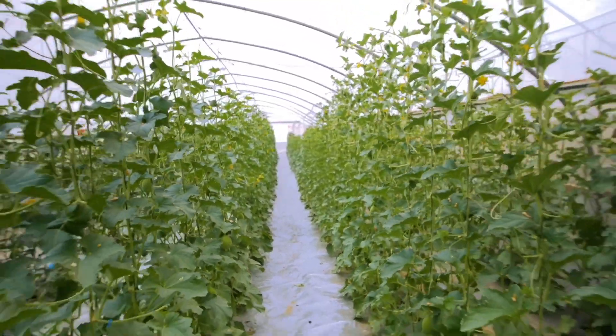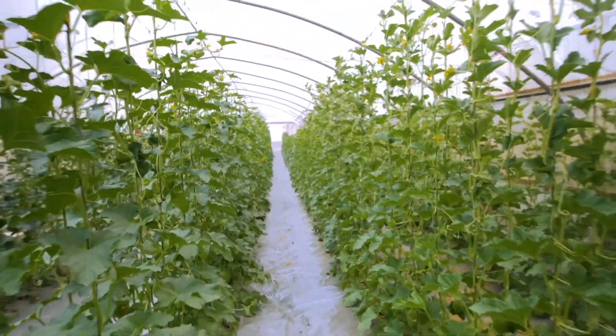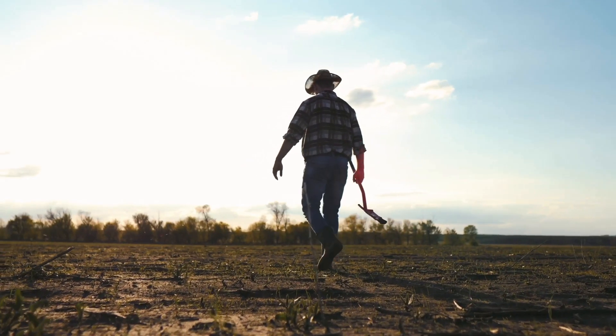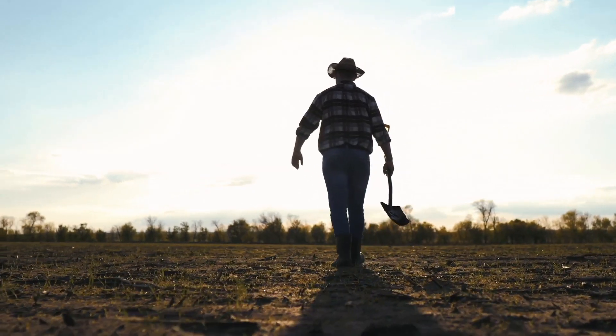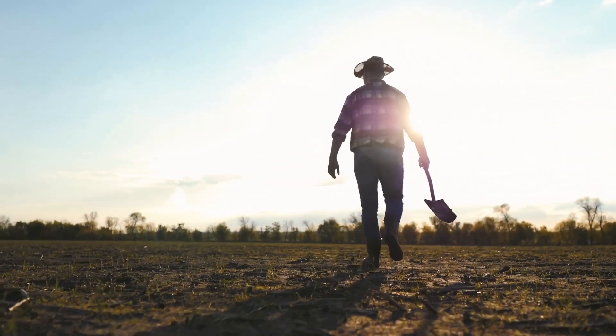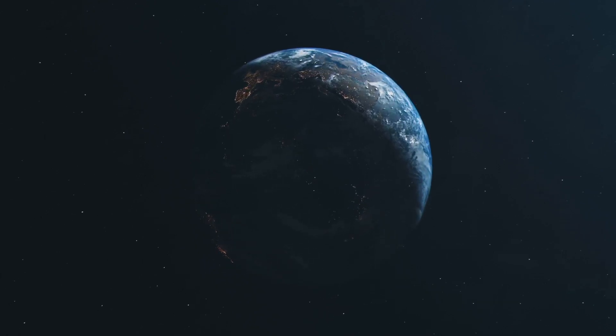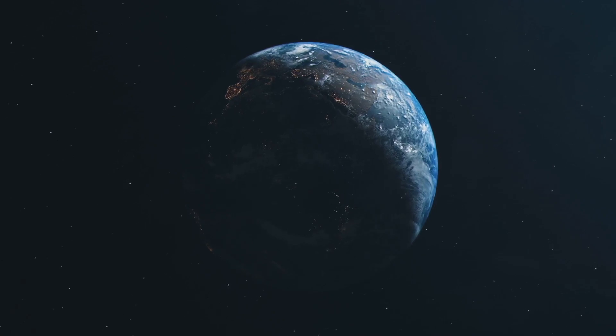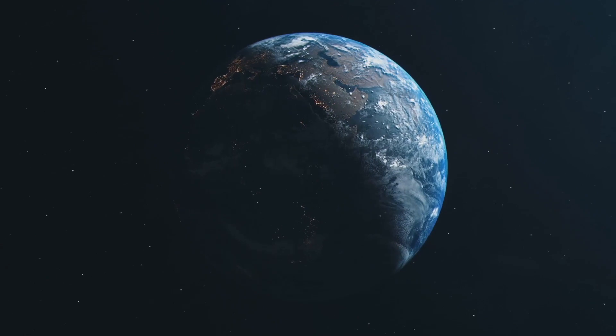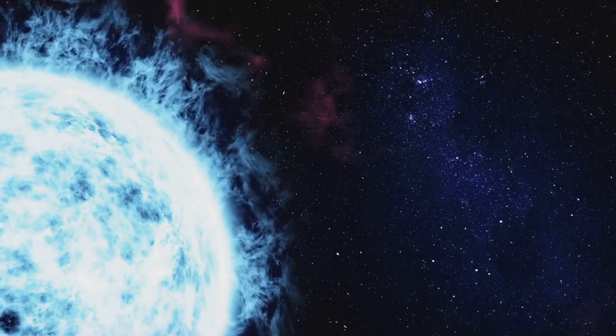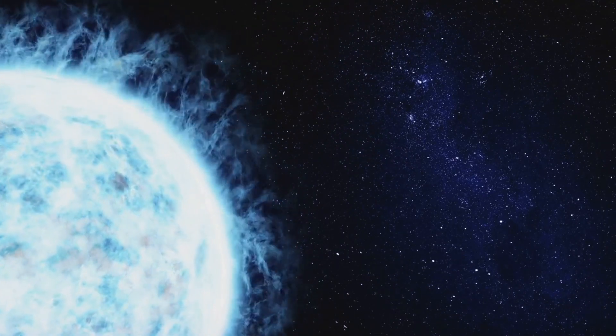Of course, human life would face its own set of challenges. We'd need to adapt not just biologically, but also socially and technologically. We'd need to rethink how we grow food, how we build our homes, and how we organize our societies. It would be a monumental challenge, but not an impossible one. So, while a non-rotating earth would drastically alter life as we know it, it might not spell the end. Life, in its tenacity and adaptability, could find a way to thrive in these new extreme conditions. And who knows? This hypothetical scenario might even offer us insights into the search for life on other planets. Life, as they say, finds a way.